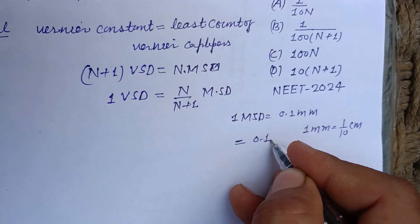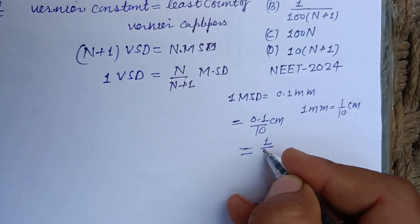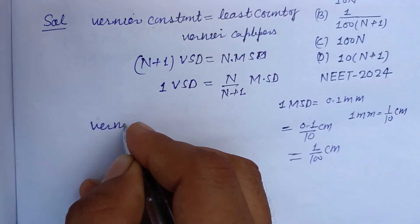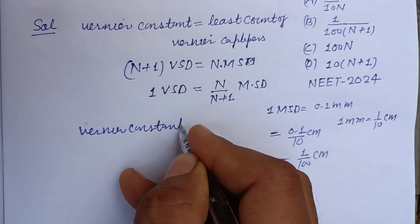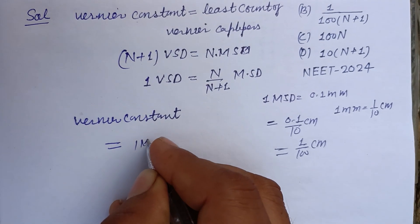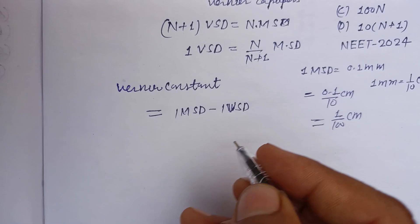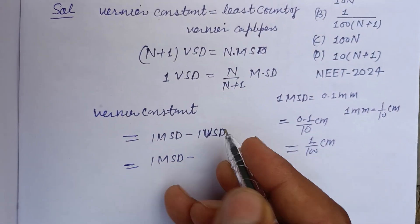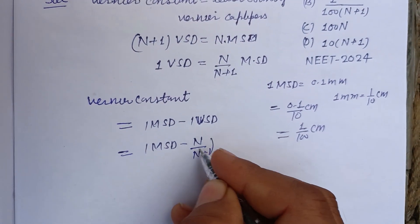Therefore, putting this as 0.1 upon 10 cm or we write it as 1 upon 100 cm. Now, Vernier constant is equal to 1 MSD, main scale division, minus 1 Vernier scale division, 1 VSD.